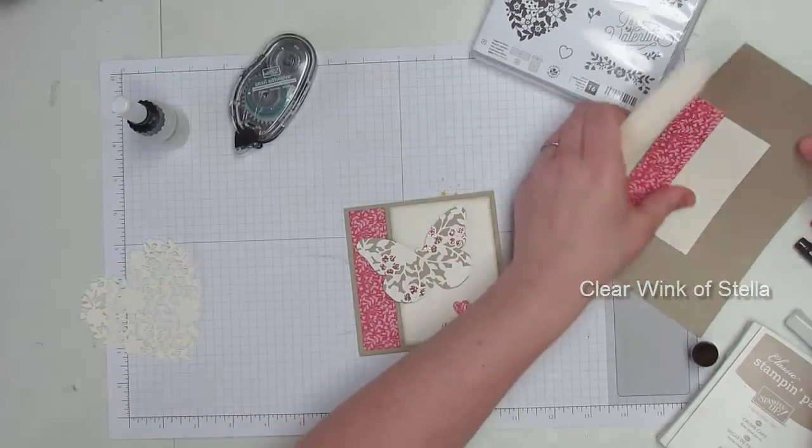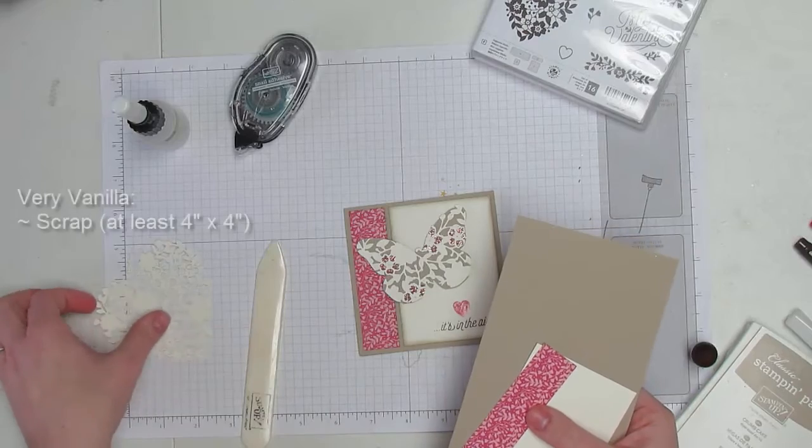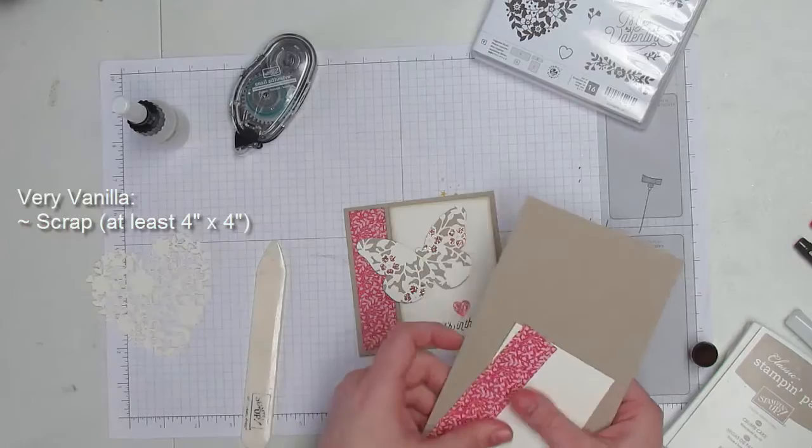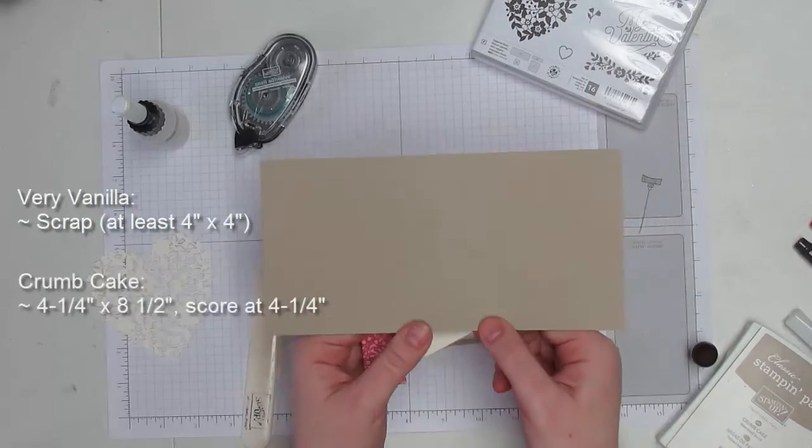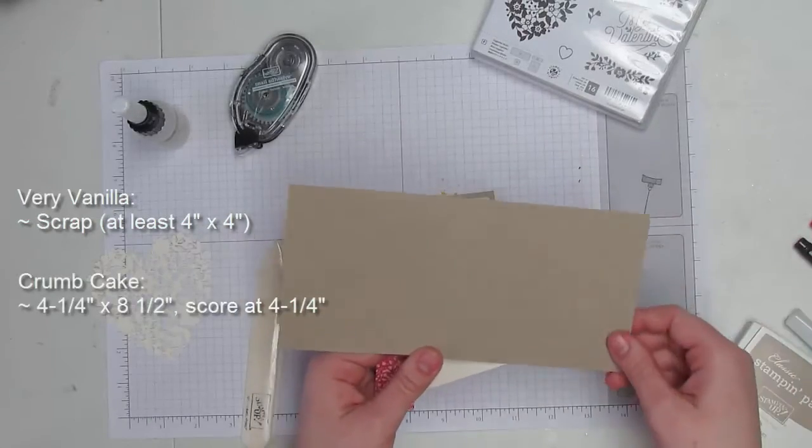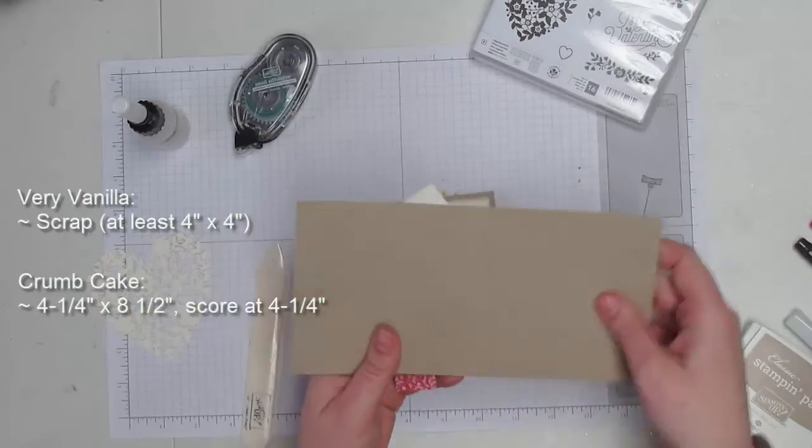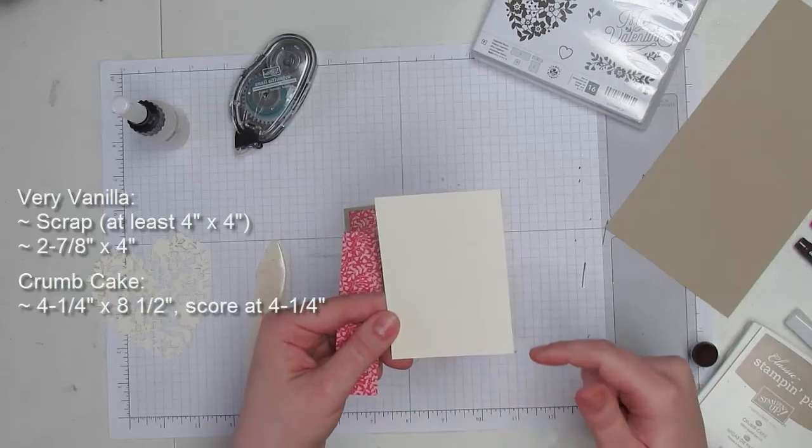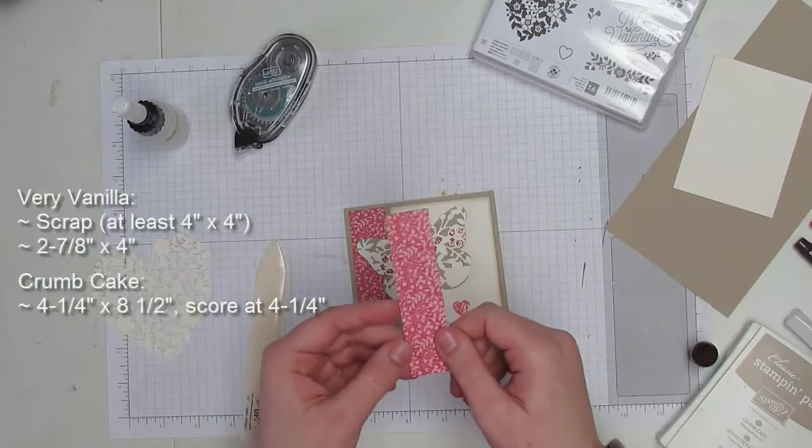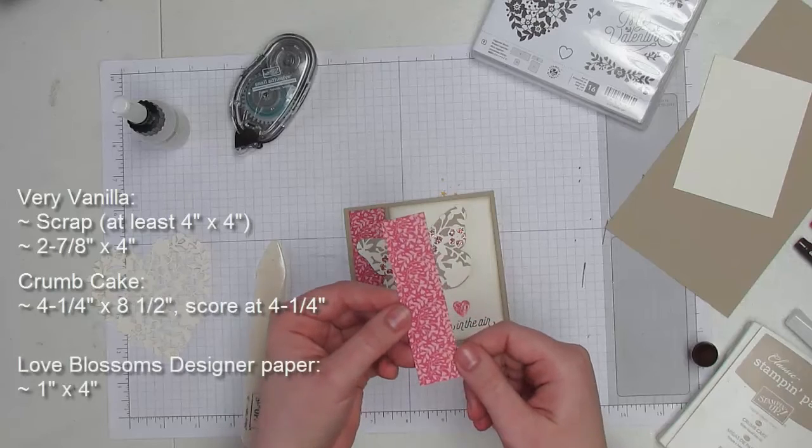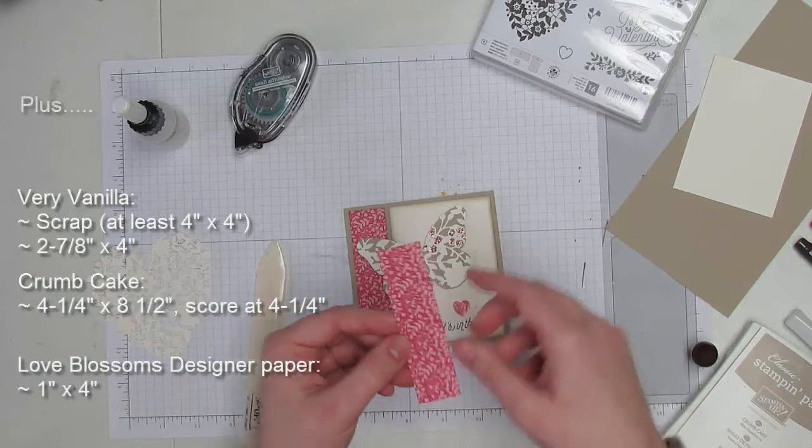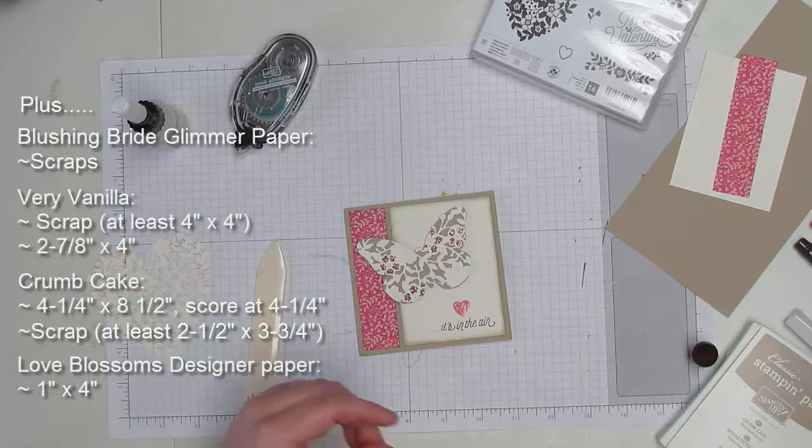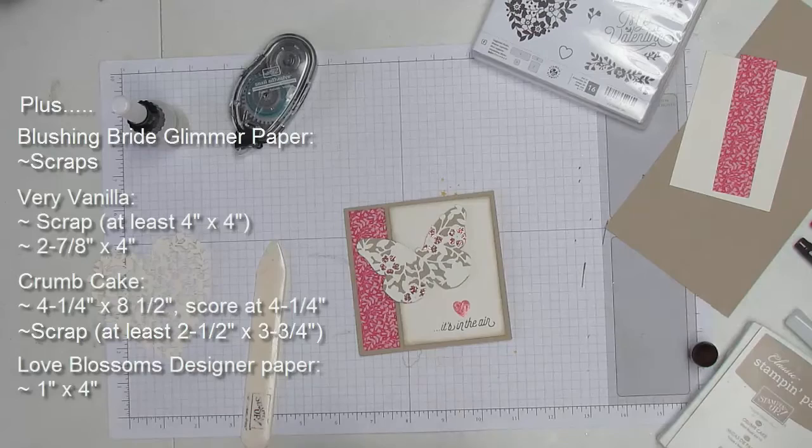Here are the papers you're going to need: a scrap of Very Vanilla that's four inches by four inches, a Crumb Cake card base that is eight and a half by four and a quarter scored at four and a quarter, another piece of Very Vanilla that is two and seven eighths by four, and a piece of this Love Blossoms designer paper from the six by six stack that is one inch by four inches. And you'll need some snips too.